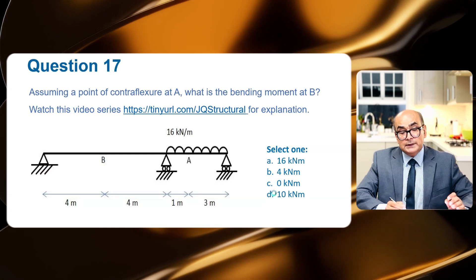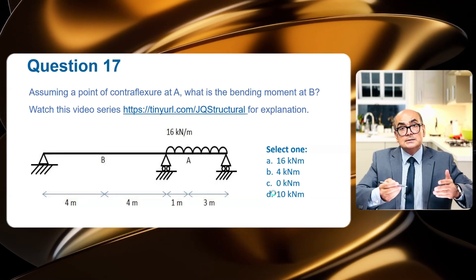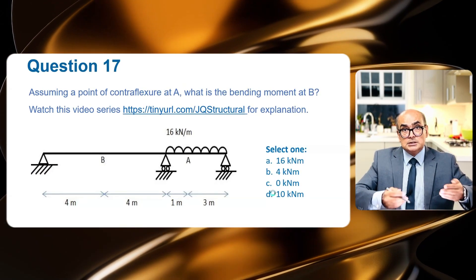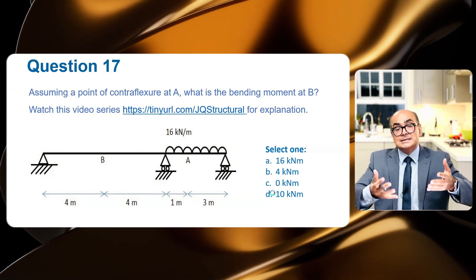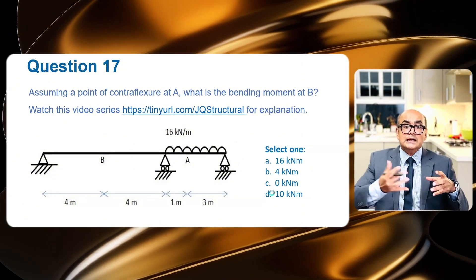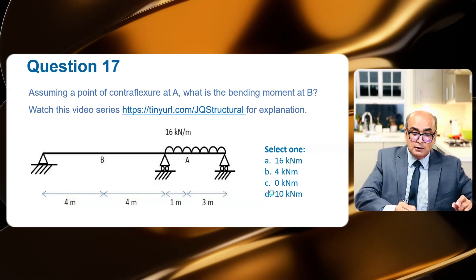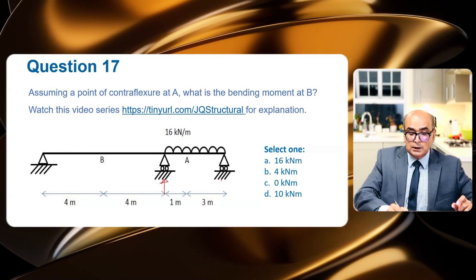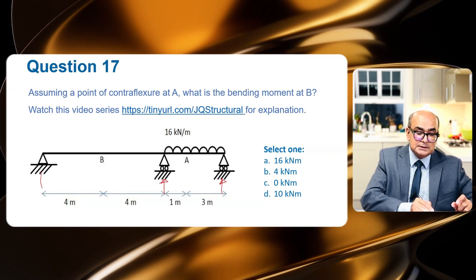By the looks of it, it is an indeterminate structure. Indeterminate structure means that the ones that we cannot solve using equilibrium equations because there are four reactions: a roller will have one reaction, a pin support will have two reactions.